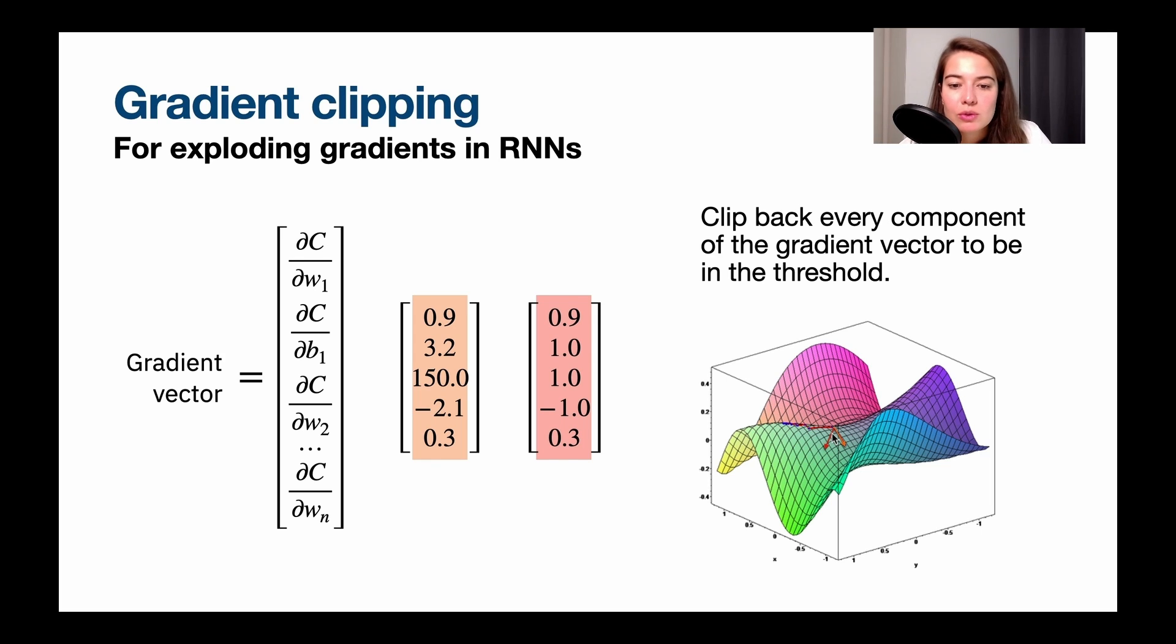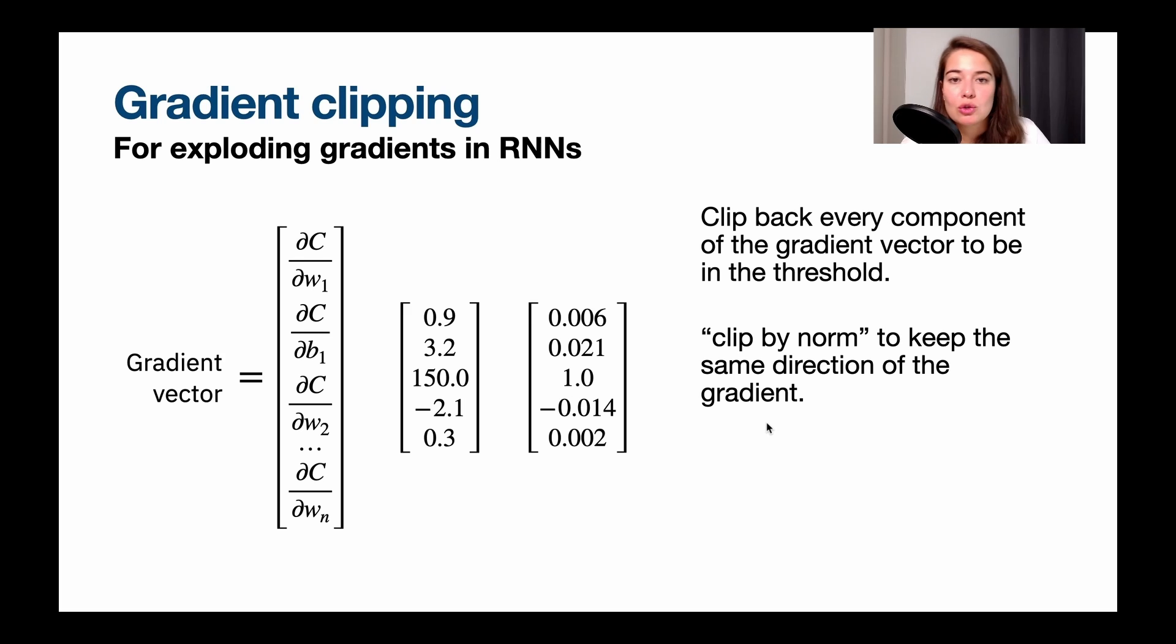So what you can do instead is use clipping by norm. And in that case, you might have guessed it already, what you do is you keep the ratio between these elements or between these components of the gradient vector and you lower them to be in between the threshold that you determined. So if I'm going to make 150 to 1,